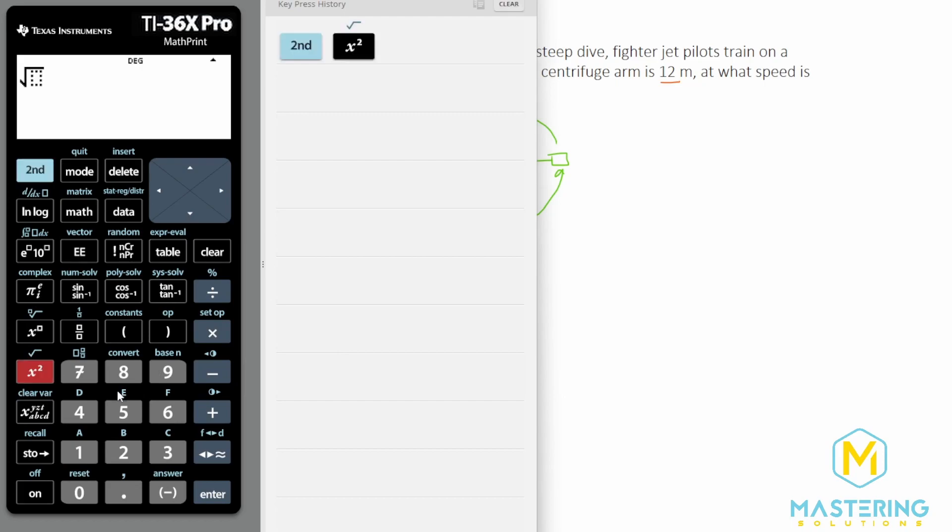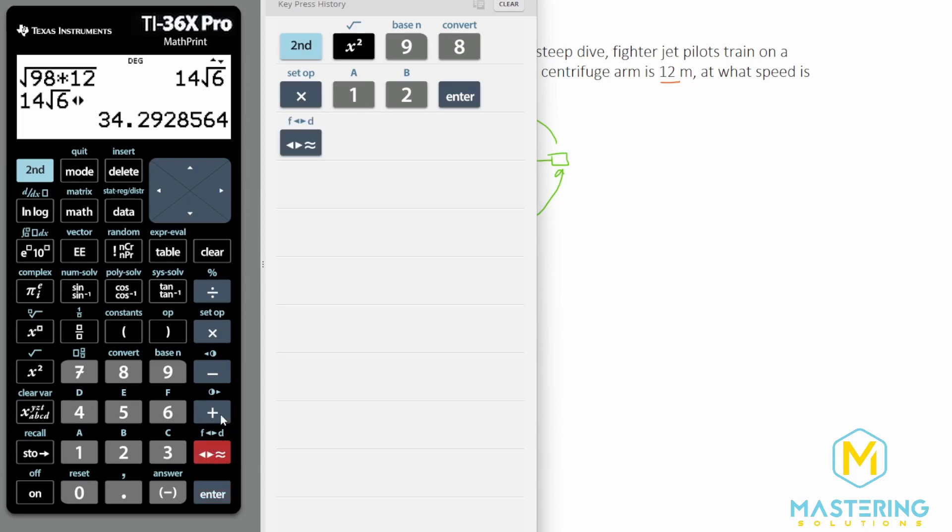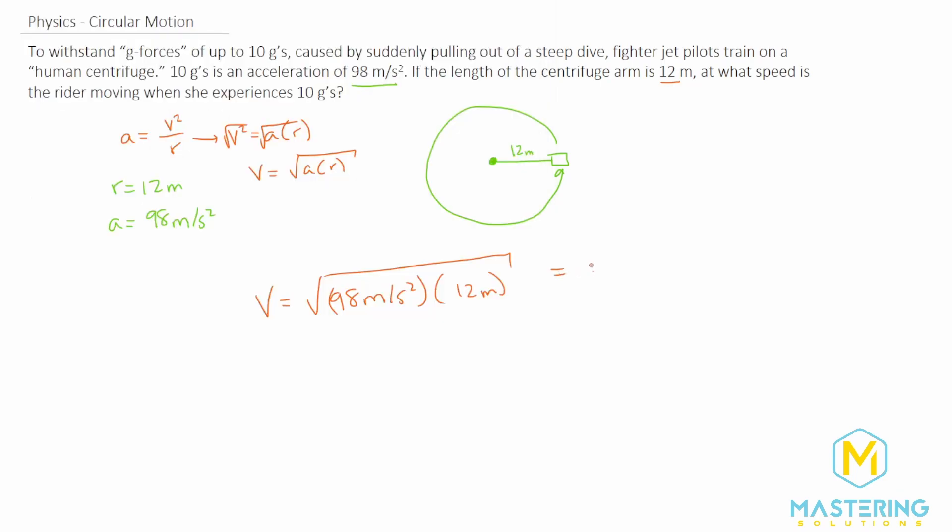So we have the square root of 98 times 12, which gives us 34. So the velocity that they're going is 34 meters per second.